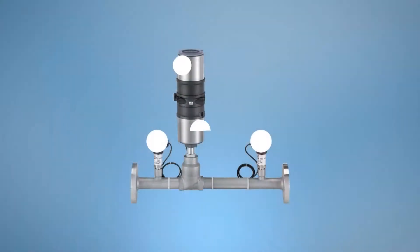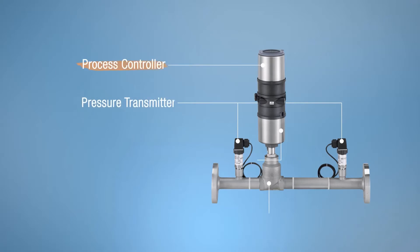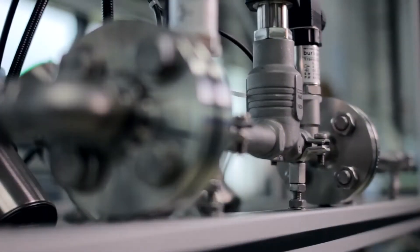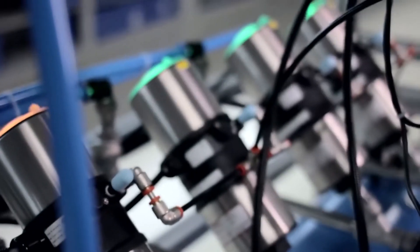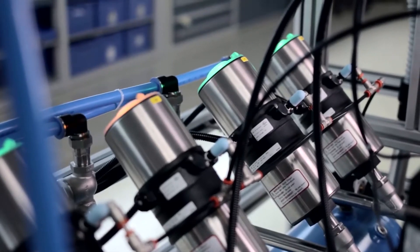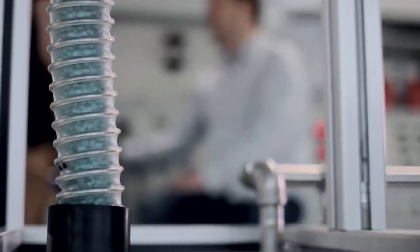The two pressure transmitters feed back the pressures before and behind the valve orifice to the controller. The controller can calculate the flow value and then if the flow value deviates from the set point, the type 8750 controller adjusts the valve automatically in order to reach the set point.